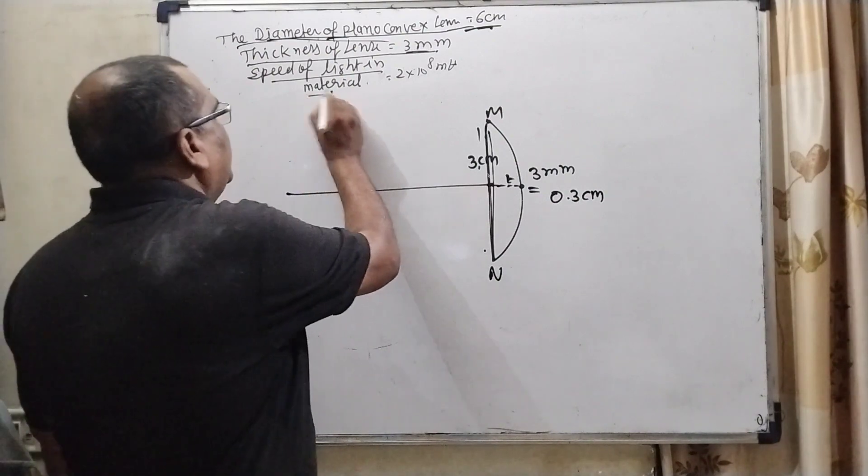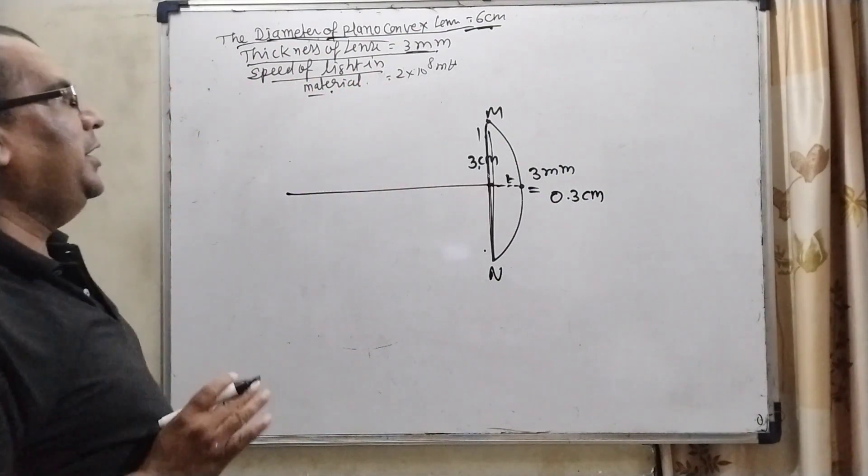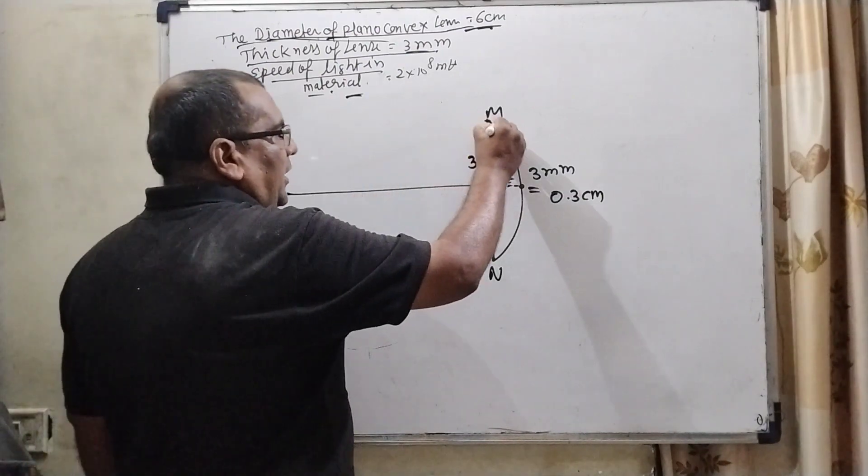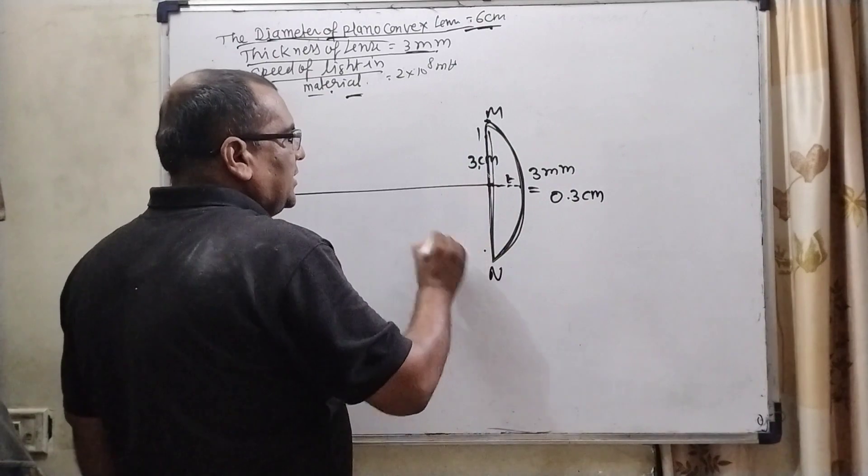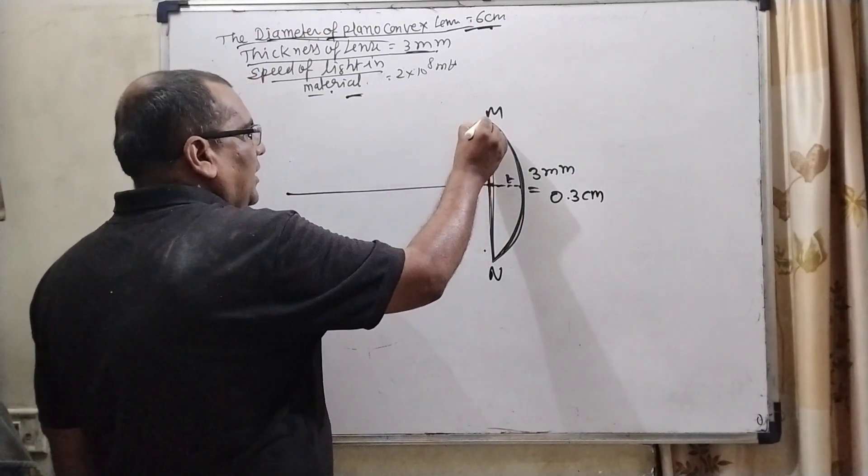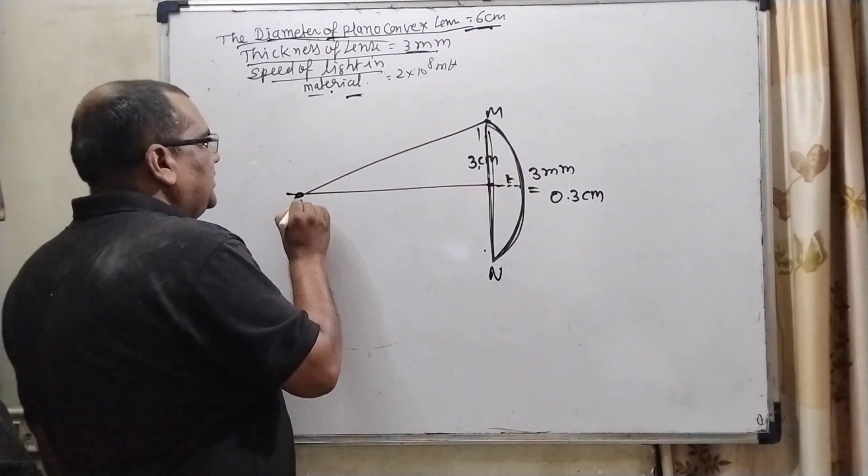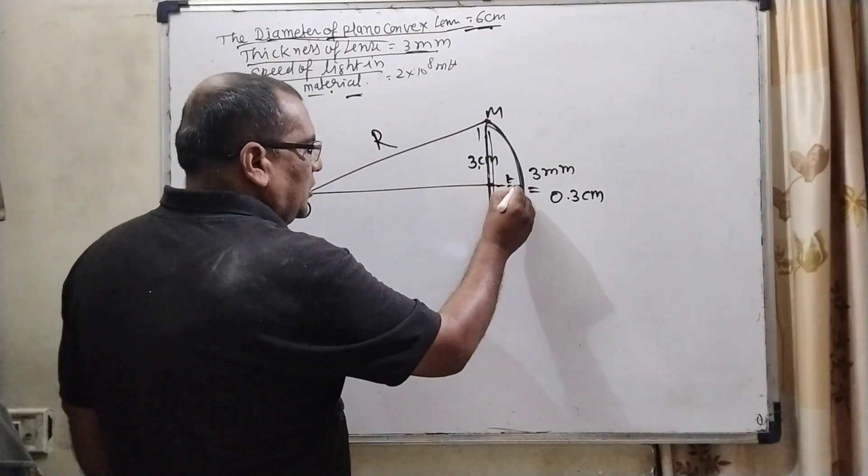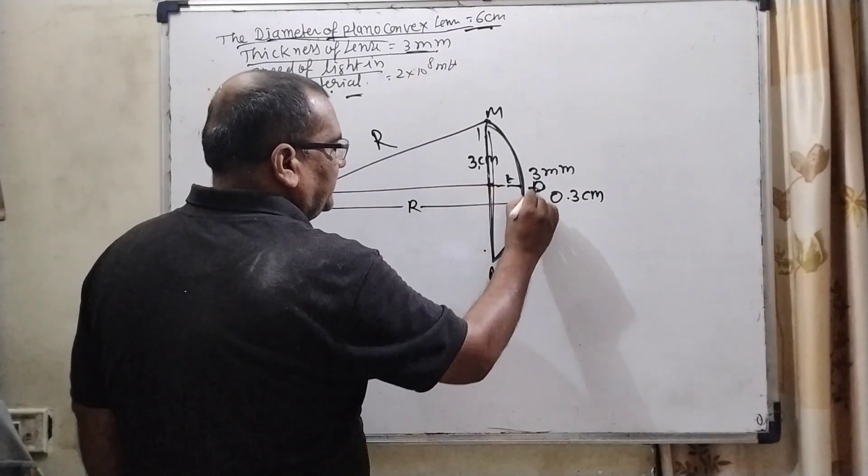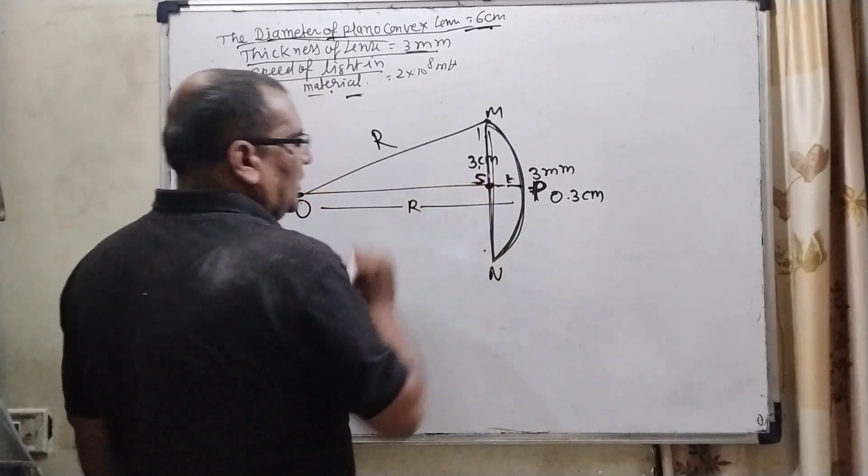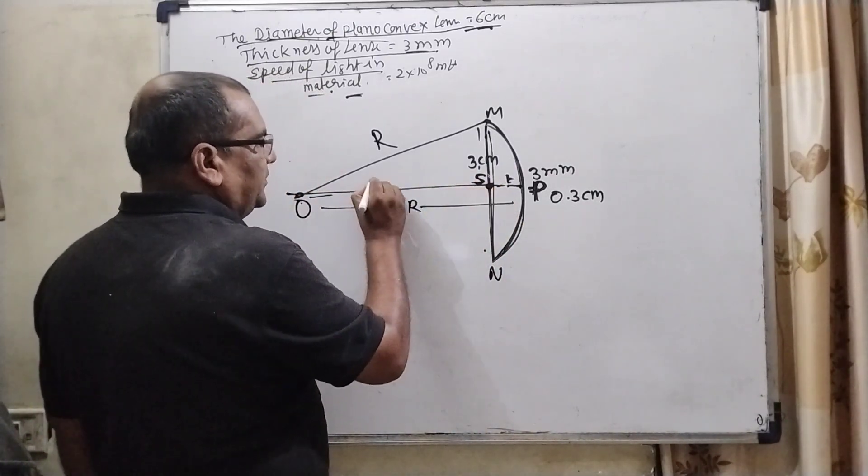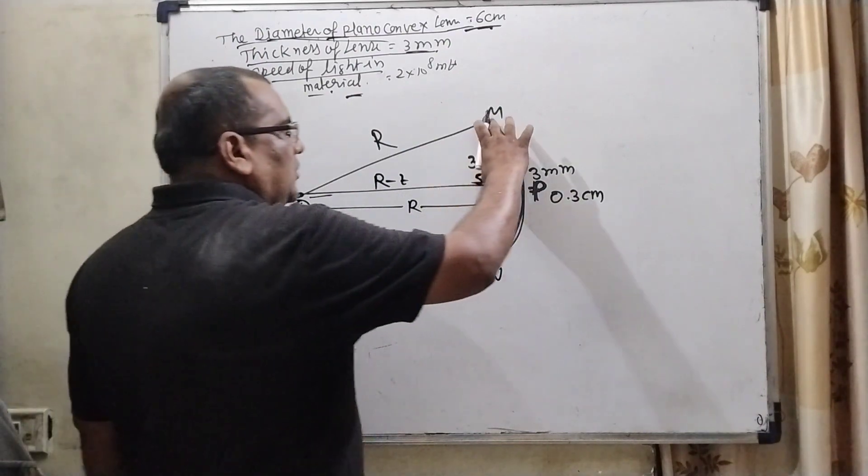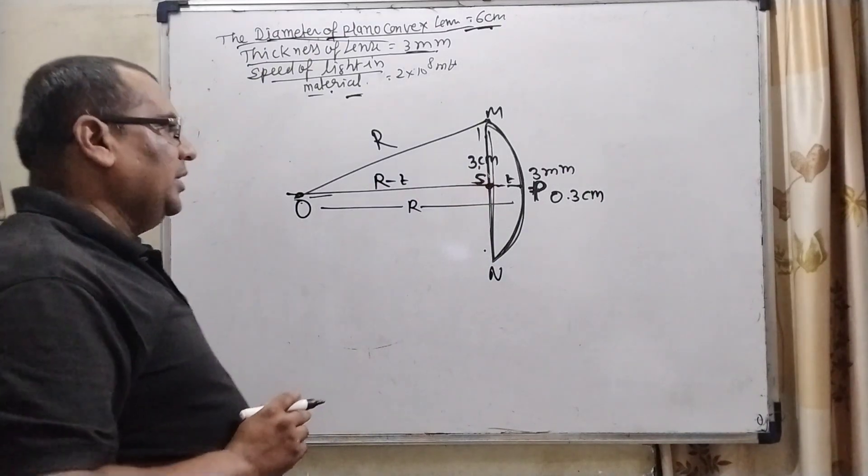And third information is given that speed of light in material is 2×10^8 m/s. Later we will use this information. So here we know that this is the curvature of this convex lens. And curvature, radius of curvature denoted by capital R. So this is considered center O. And this is R, radius of curvature. So obviously this is also radius of curvature from this pole point. And let us say this is S point. So remaining distance is R minus T from O, S. And this distance is also given, that is M, S, 3 cm.